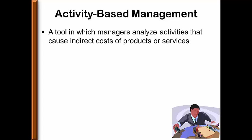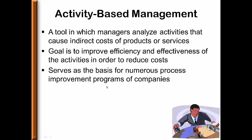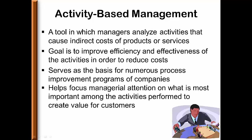Activity-based management occurs after activity-based costing. It is a tool in which managers analyze activities — once a company has determined what causes costs to exist, they can manage those costs and become more profitable. The goal is to make the company more efficient and effective by focusing on the activities and reducing them, which then reduces cost. It also serves as the basis for numerous process improvement programs and helps focus managers' attention on what is most important to create value for companies.